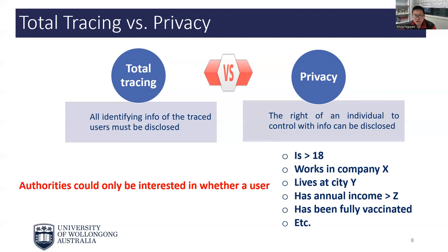Furthermore, in many real-life situations it is not necessarily the highest priority for authorities to perform a total tracing. For instance, the authorities could only be interested in learning whether an anonymous user is over 18 years old, or works in a given organization, or lives in a particular area, or has an annual income exceeding certain thresholds, or has been fully vaccinated against COVID-19, etc. This observation motivated us to consider systems in which users and authorities have a certain agreement on which piece of information can possibly be disclosed for each signature.